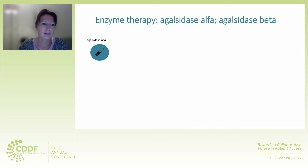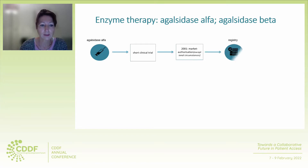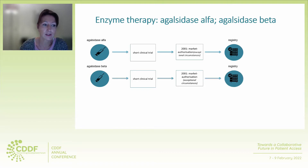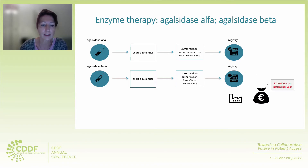Enzyme therapy has been developed for Fabry disease more than two decades ago, and interestingly there were two preparations that were developed. Agalsidase alpha was studied in a short clinical trial and received market authorization in 2001. Because it was a conditional approval, a registry was set up by the company. At the same time, agalsidase beta from another company had market authorization under exceptional circumstances with another registry.